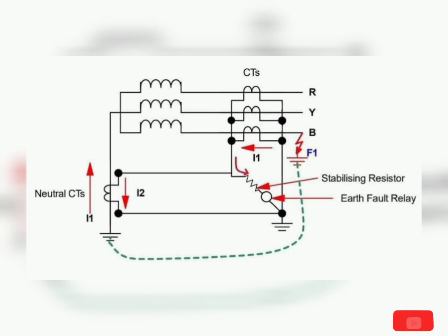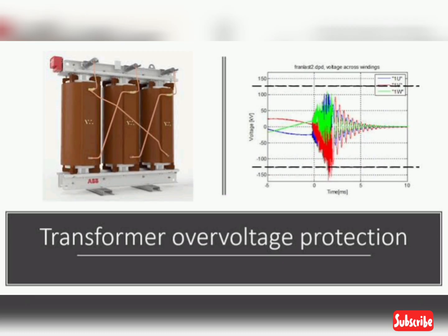Earth fault protection detects earth faults in the transformer winding and trips the circuit breaker to isolate the faulty transformer. Voltage protection monitors the voltage level of the transformer; if the voltage exceeds a certain limit, the circuit breaker will trip to protect the transformer from damage.